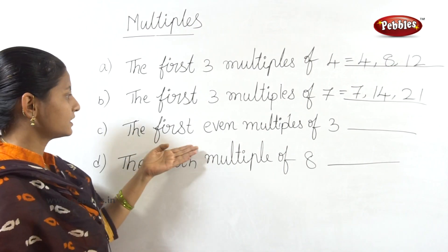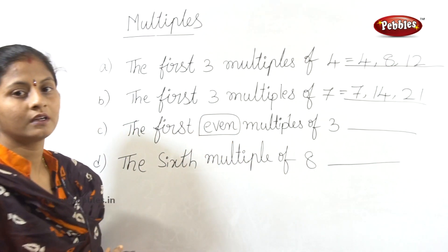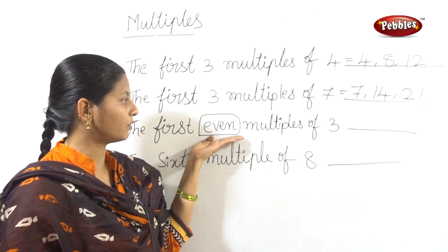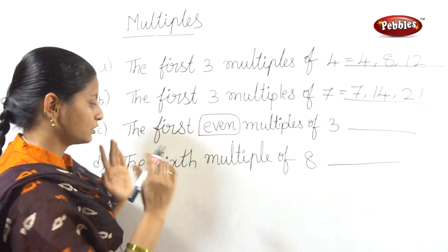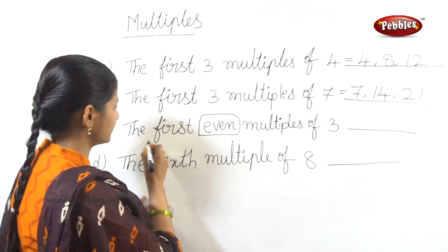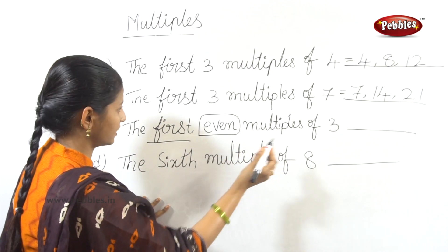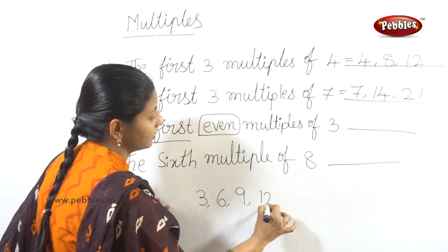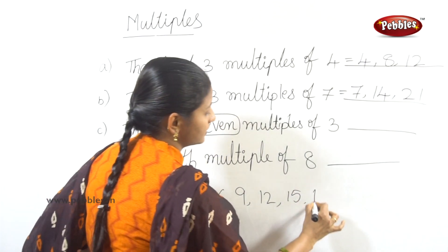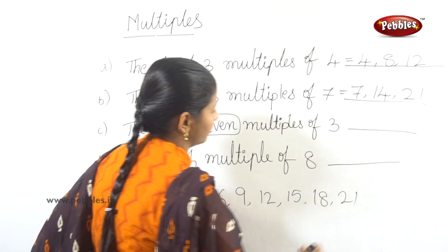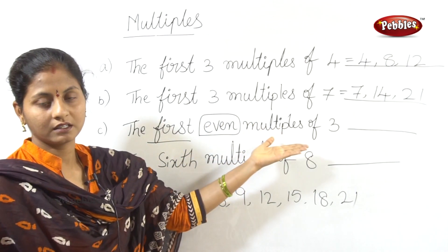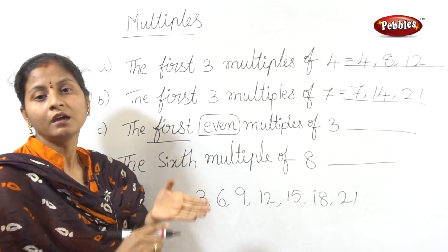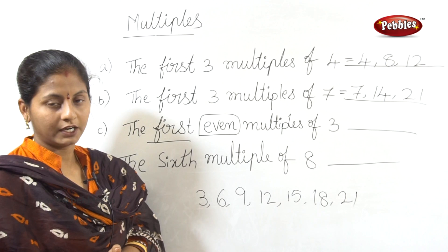Next: the first even multiples of 3. We list the multiples of 3: 3 ones are 3, 3 twos are 6, 3 threes are 9, 3 fours are 12, 3 fives are 15, 3 sixes are 18, 3 sevens are 21. Even numbers end in 0, 2, 4, 6, or 8.